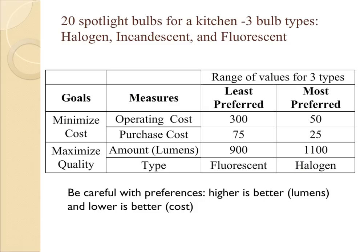The measures are the annual operating costs for these 20 bulbs, the purchase cost, the amount of light they generate measured in lumens, and the type of bulb. In Logical Decisions, when you set up the individual measures, you have to specify the range of values for all three bulb types. The operating cost ranges from a high of $300 (least preferred) to a low of $50 (most preferred). The purchase cost ranges from $75 to $25. The lumens range from a low of 900 to a high of 1,100. For bulb type, the least preferred is fluorescent, most preferred is halogen, and incandescent is somewhere in the middle.